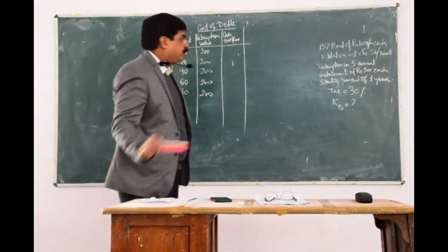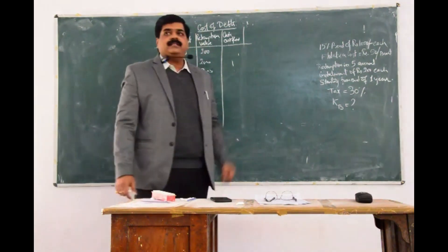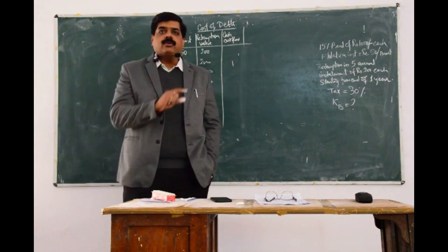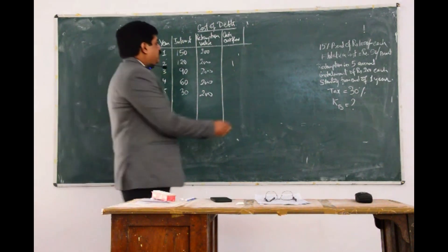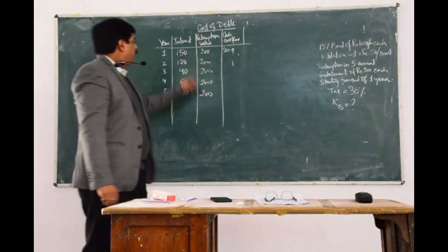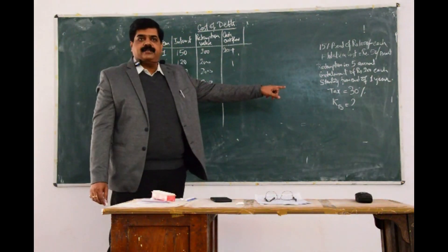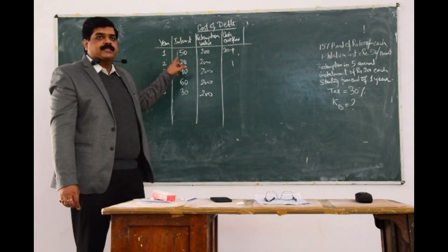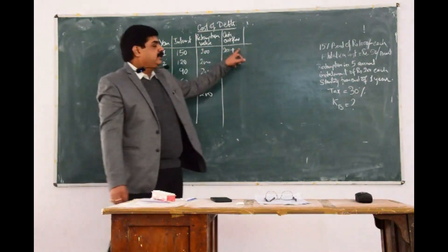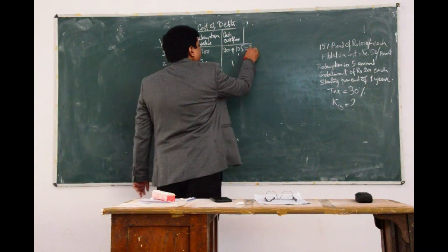Now when we calculate the cash flow, the tax rate is also given as 30%. As you are aware, tax has to be adjusted on the interest amount. So the cash outflow is ₹200 plus interest after tax. For year 1: 200 plus 70% of 150 = 200 plus 105 = ₹305 cash outflow after tax.